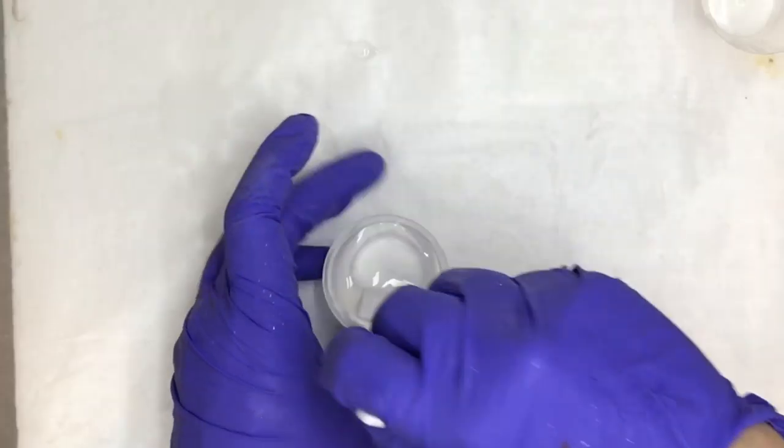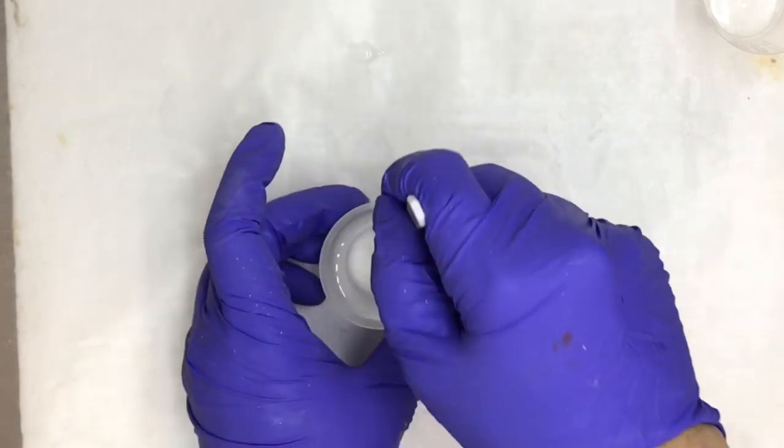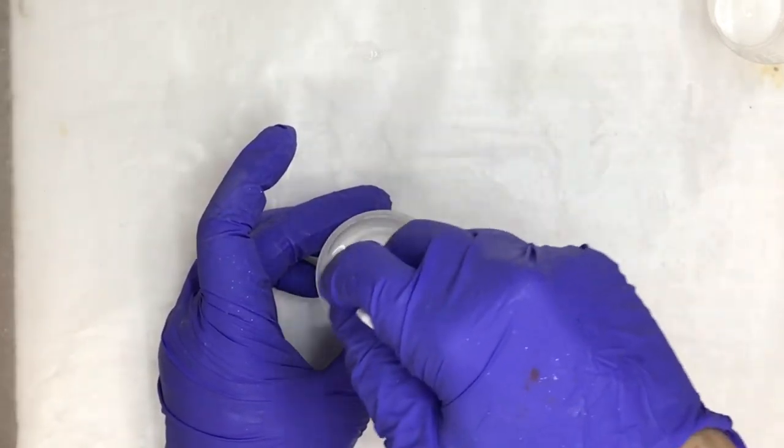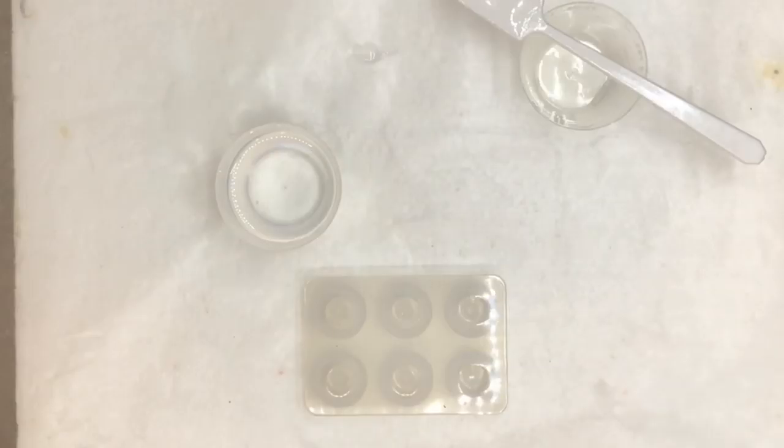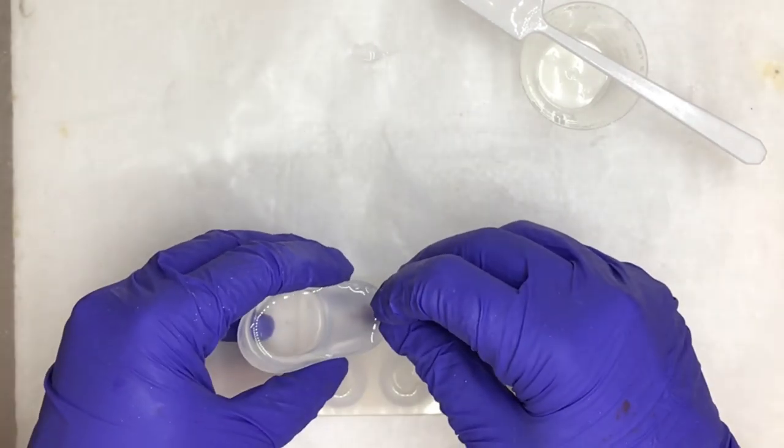On average, you will need about two to three minutes for your resin mix to go clear. Be sure to scrape the sides of your cup and mixing stick several times during the process.